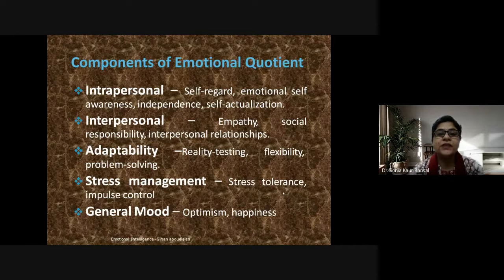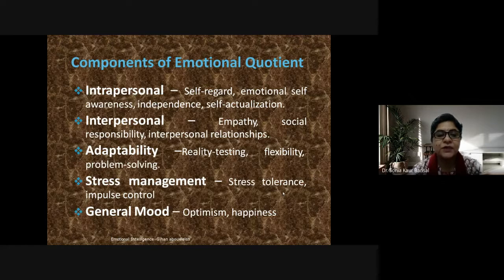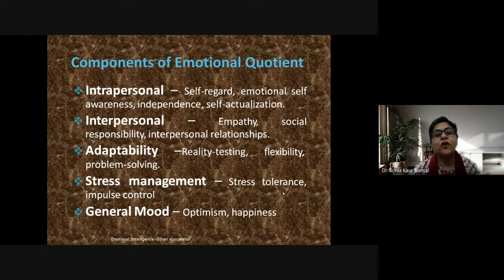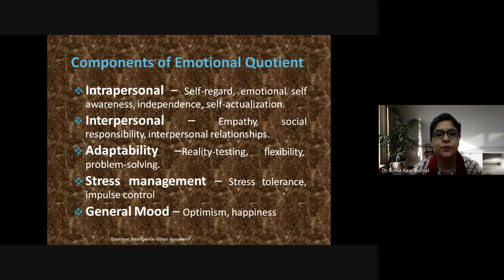Now let's understand the components of emotional quotient. These are: intrapersonal, interpersonal, adaptability, stress management, and general mood. The intrapersonal component is related to self-regard and emotional self-awareness — personal feeling for oneself. Emotional quotient is built up when you regard yourself and your emotional self-awareness is developed, meaning you know what you feel in which situation.